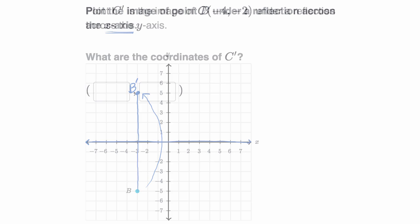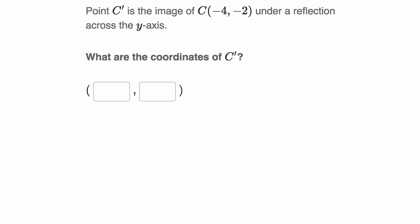Let's do another example. So here, they tell us point C prime is the image of C, which is at the coordinates negative four comma negative two, under a reflection across the y-axis. What are the coordinates of C prime? So pause this video and see if you can figure it out on your own.